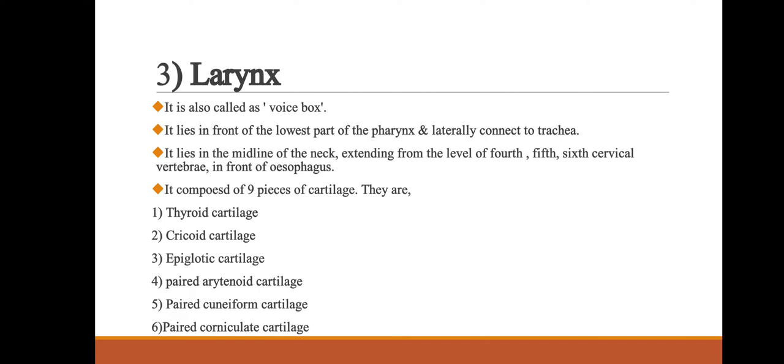The third part of the respiratory system is the larynx, also called the voice box. It lies in front of the lowest part of the pharynx and connects laterally to the trachea. It lies in the midline of the neck extending from the level of the 4th, 5th, and 6th cervical vertebrae, in front of the oesophagus. It is composed of 9 pieces of cartilage: the 1st is thyroid cartilage, 2nd cricoid cartilage, 3rd epiglottic cartilage.